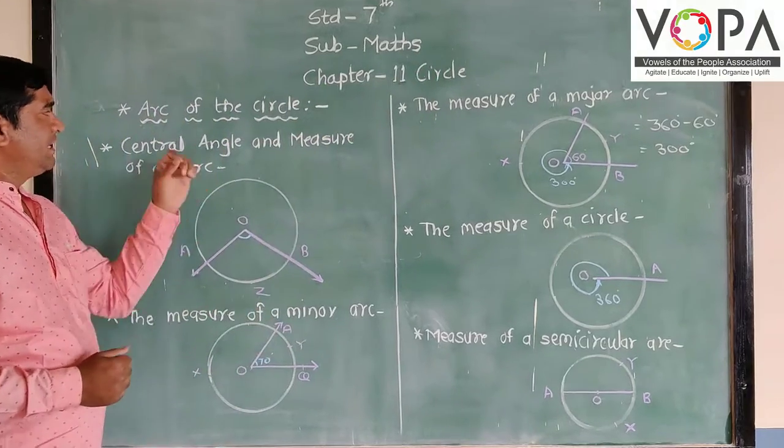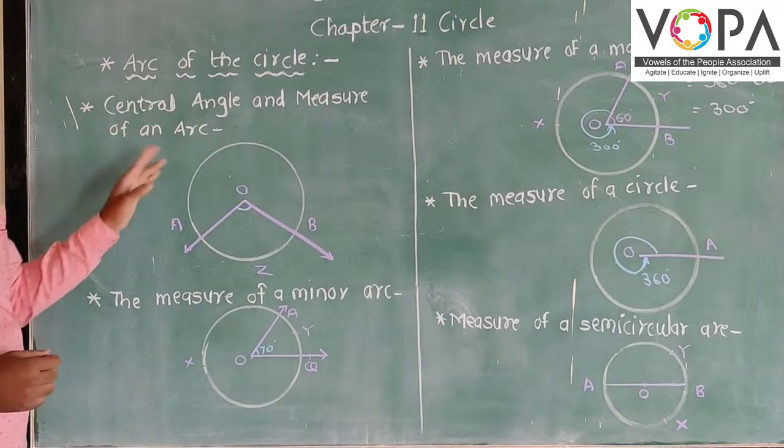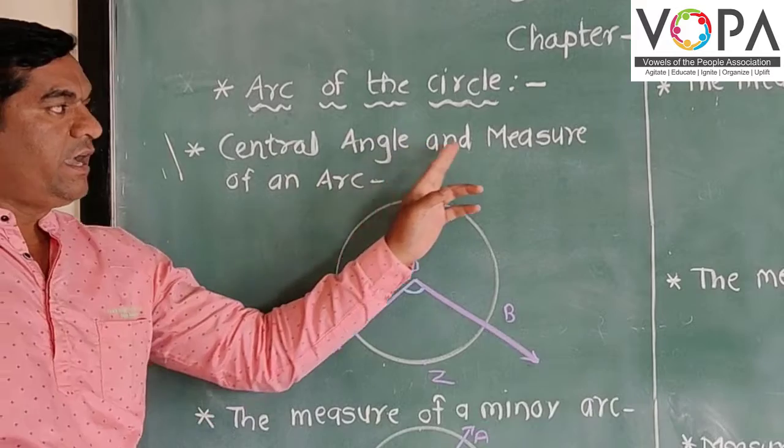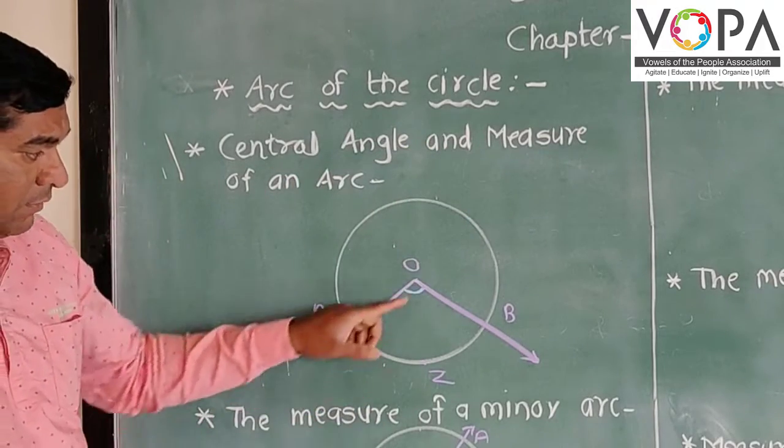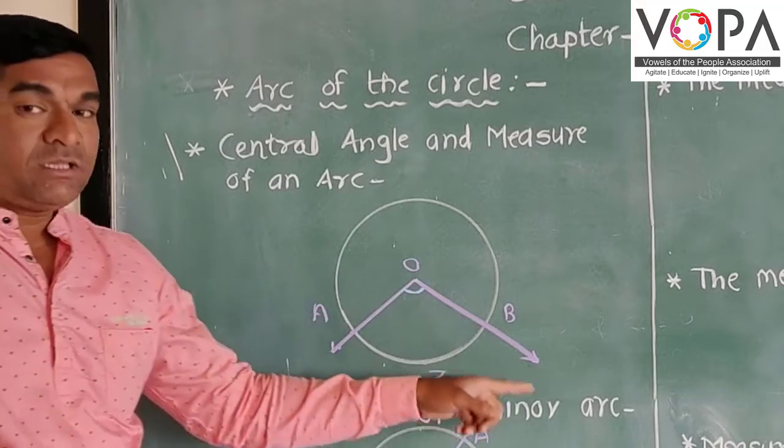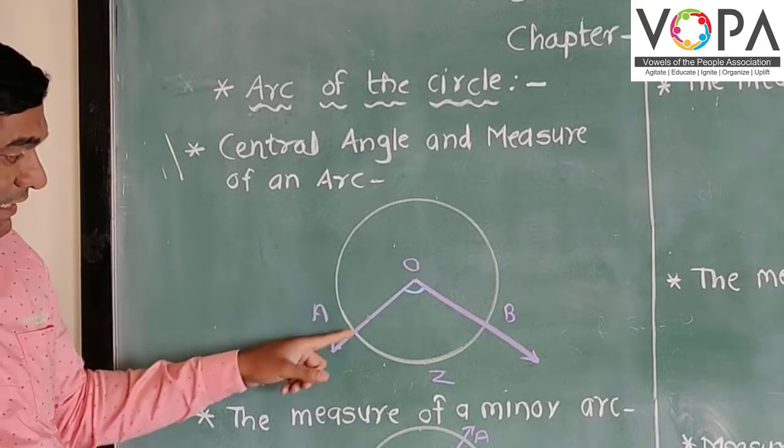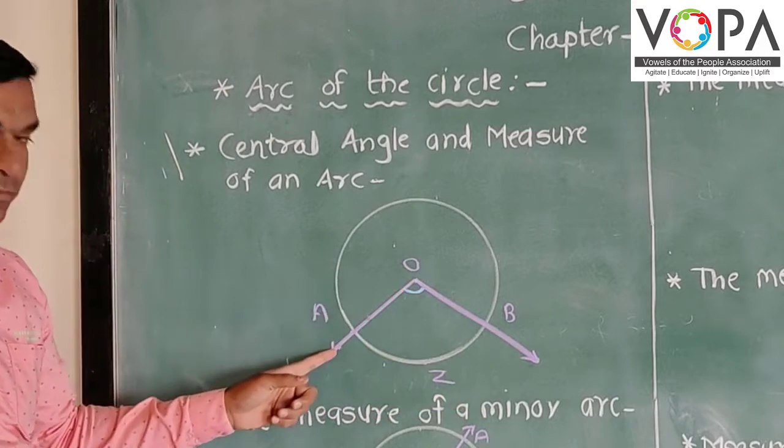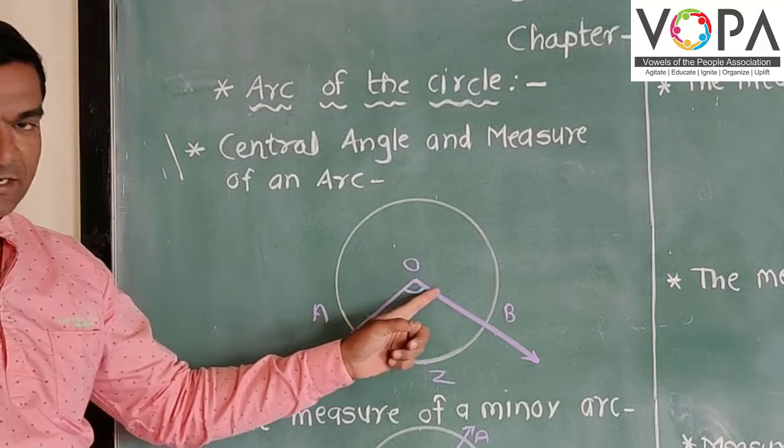Today I want to find the basic information about the arc of the circles. The arc of the circles for the first central angle and the measure of that arc. Central angle means whenever we draw that angle there and the vertex of the angle is on the center of the circle, at that time this angle is formed there and this angle we call it as a central angle.